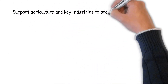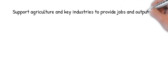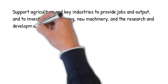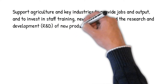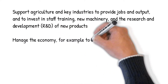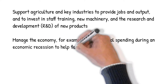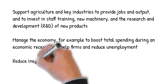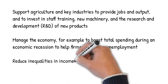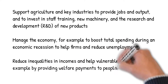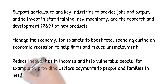Governments can also support agriculture and key industries to provide jobs and output, and to invest in staff training, new machinery, and the research and development of new products. They can manage the economy by boosting total spending during an economic recession to help firms and reduce unemployment, and reduce inequalities in incomes by providing welfare payments to people and families in need.